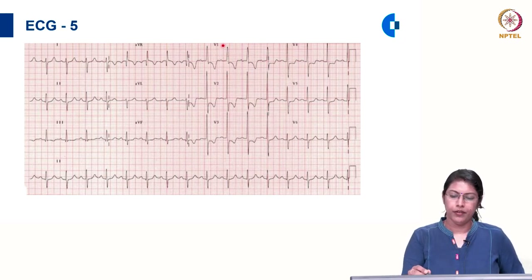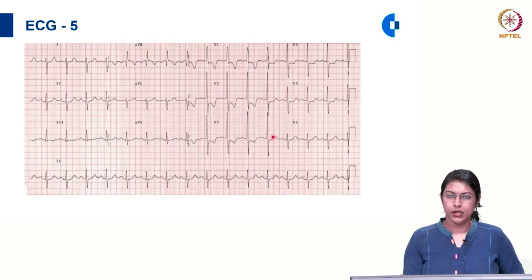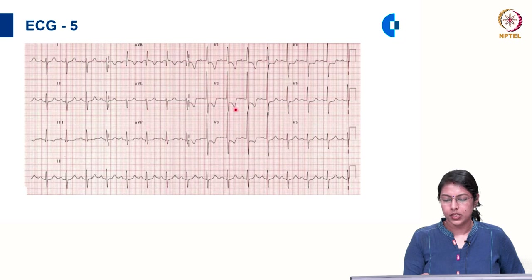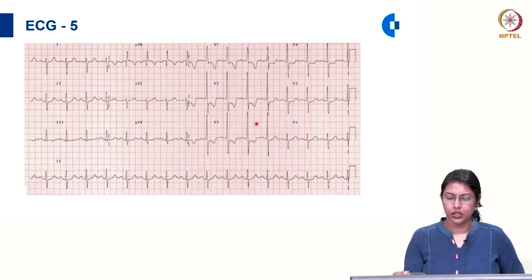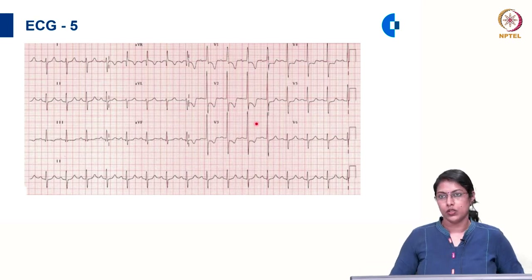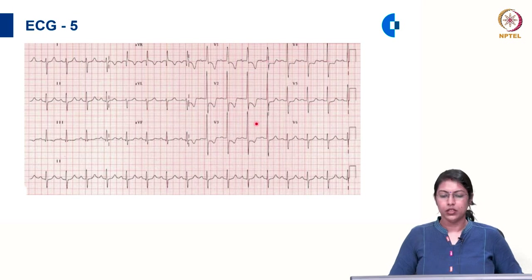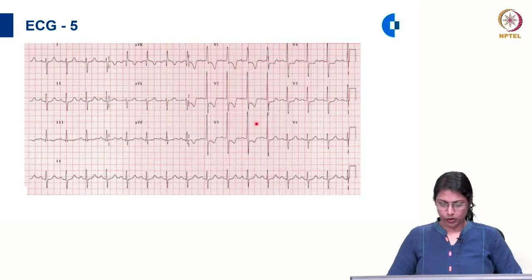In ECG 5, in V1 we are seeing a tall R and small S. The R is definitely more than 7 millimetre in amplitude, and the RS ratio is definitely more than 1. There are also ST-T changes visible in V1, V2, and V3, which is also suggestive of right ventricular hypertrophy. This looks like a type A right ventricular hypertrophy pattern.